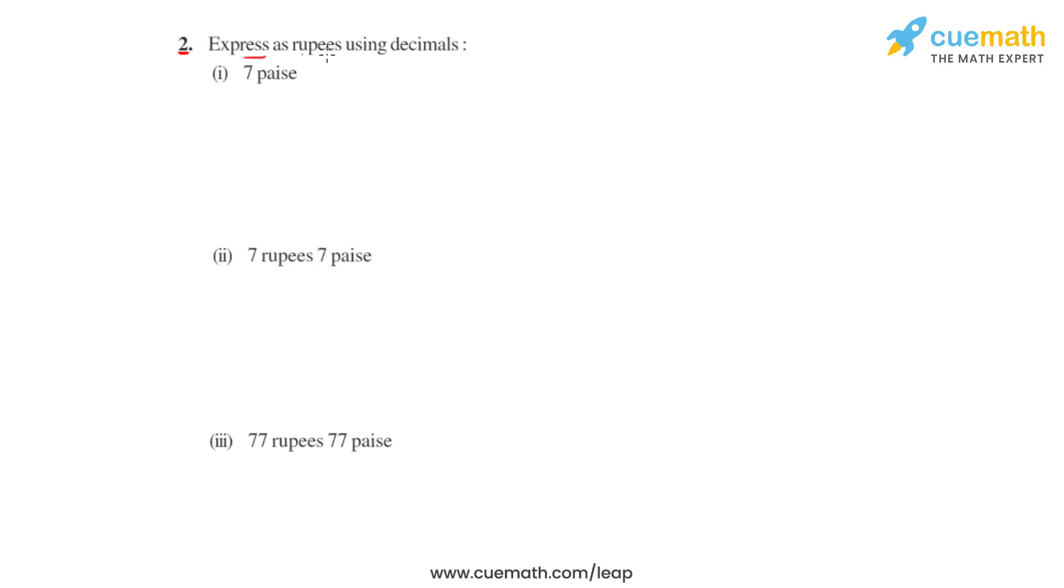Question number two says express the given bits in rupees using decimals. Before we start solving each of the bits, we know that there are 100 paise in one rupee, so we can write that 100 paise equals one rupee. Now if we want to convert paise in rupees, we have to divide paise by 100.